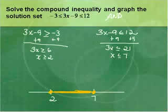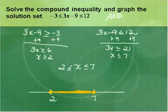The graph shows the solution set between 2 and 7. To write it with interval notation: using set builder notation, it would be written as 2 ≤ x ≤ 7. With interval notation, it would be [2, 7] — brackets around each because they have closed circles.